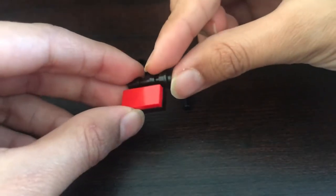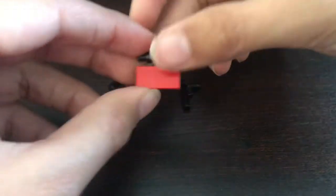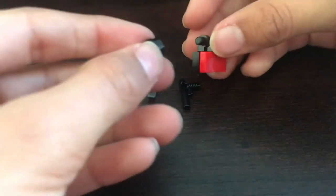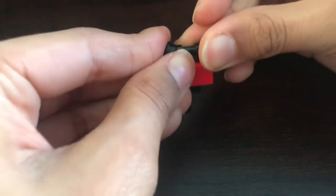Then we'll take this round part and clip it right here. Then we'll take one more round part like that and clip it on this side.